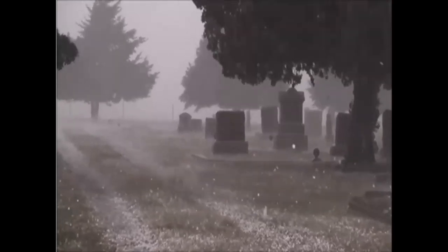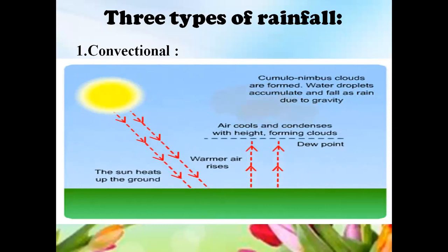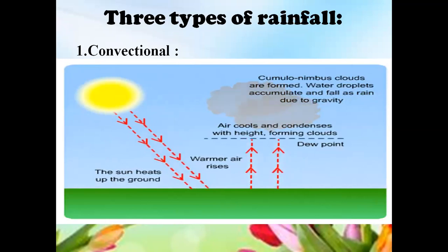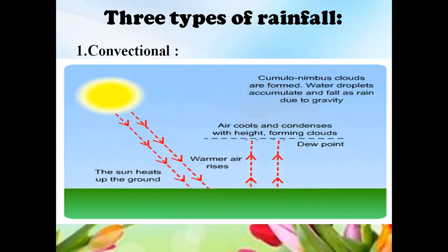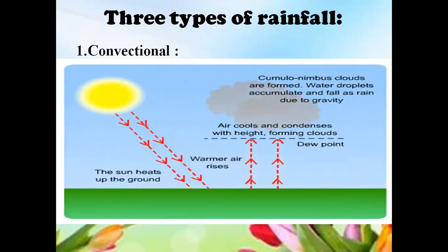There are three main types of rainfall. The first one is conventional rainfall. It is common in equatorial regions and is also known as four o'clock rain. As the air above the surface of the earth gets heated, it becomes less dense and rises. The ascending air cools, water vapour condenses and forms cumulus clouds. These clouds cross the saturation point and come down as a huge downpour along with thunder and lightning.